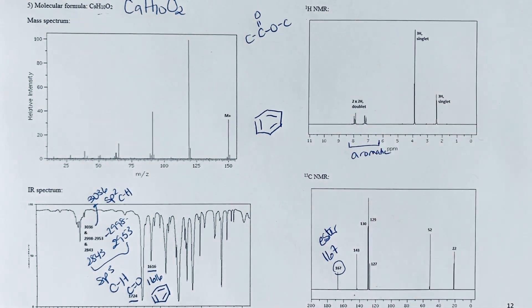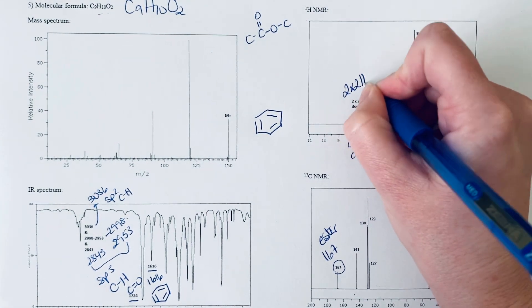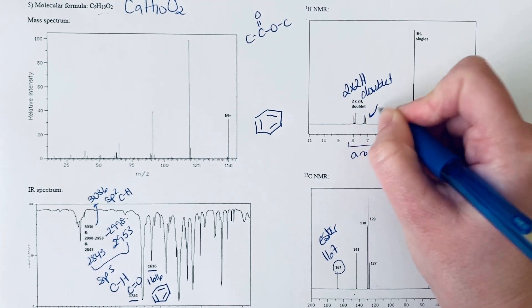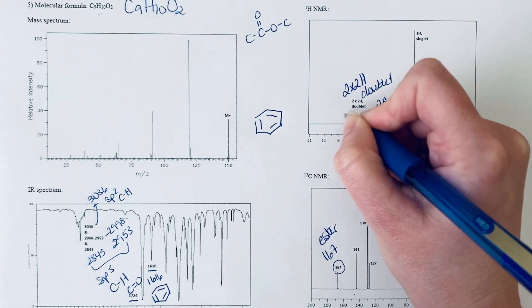Let's move to our proton NMR and go to the aromatic region to get an idea of how this is substituted. What we see here says two times two hydrogen doublet, so that means that each of these signals is a two hydrogen doublet.